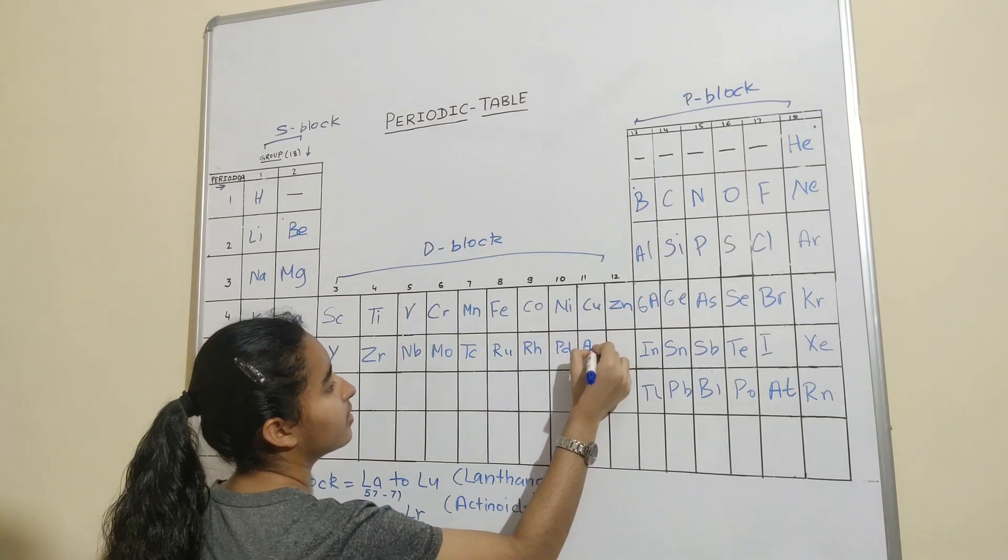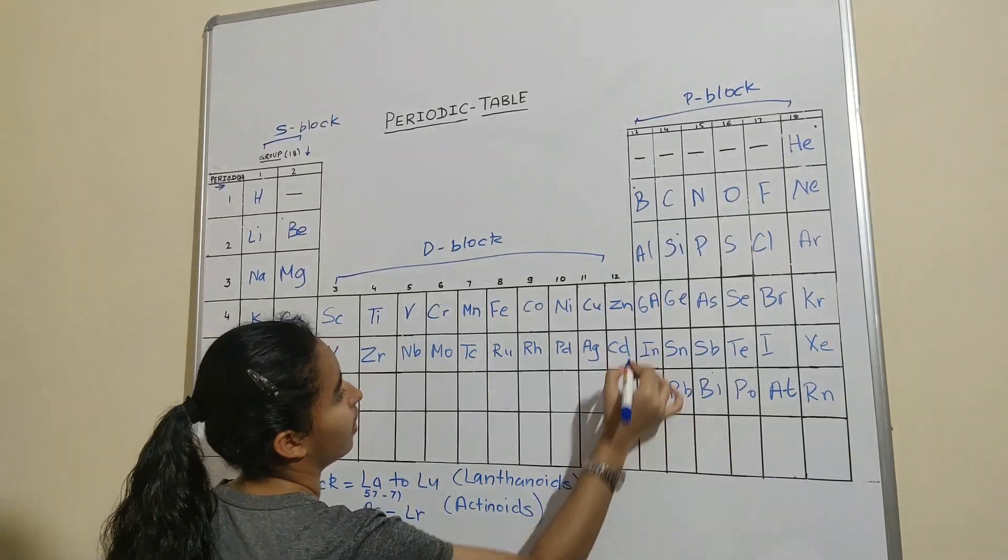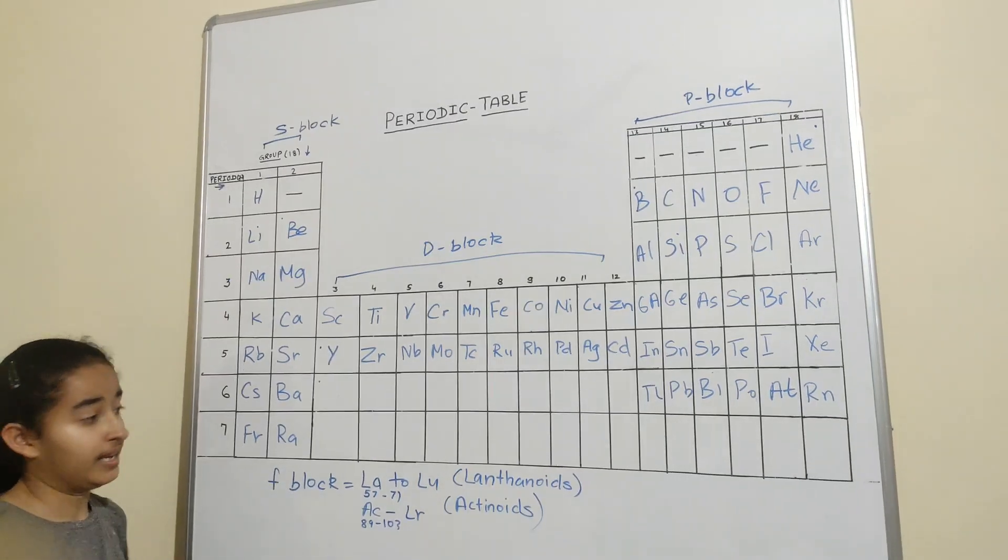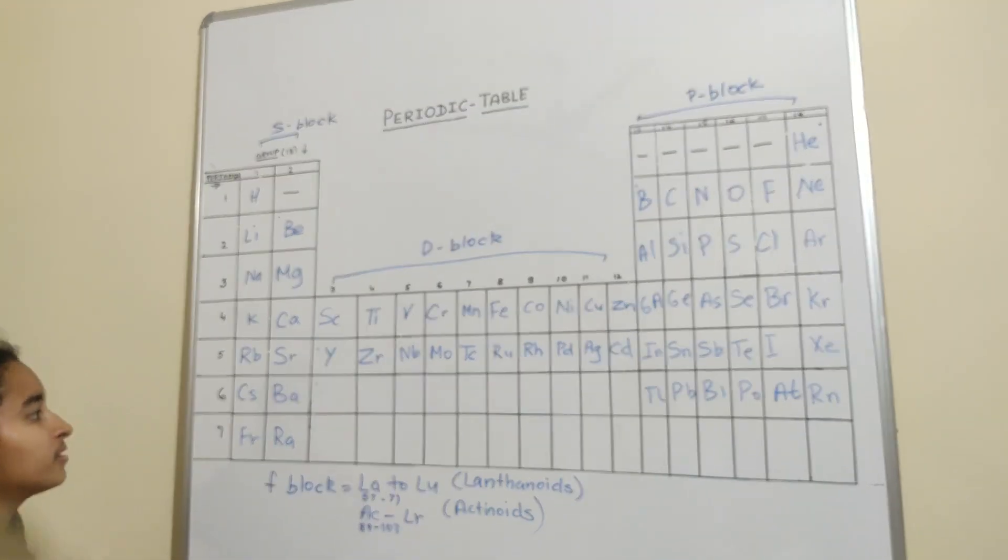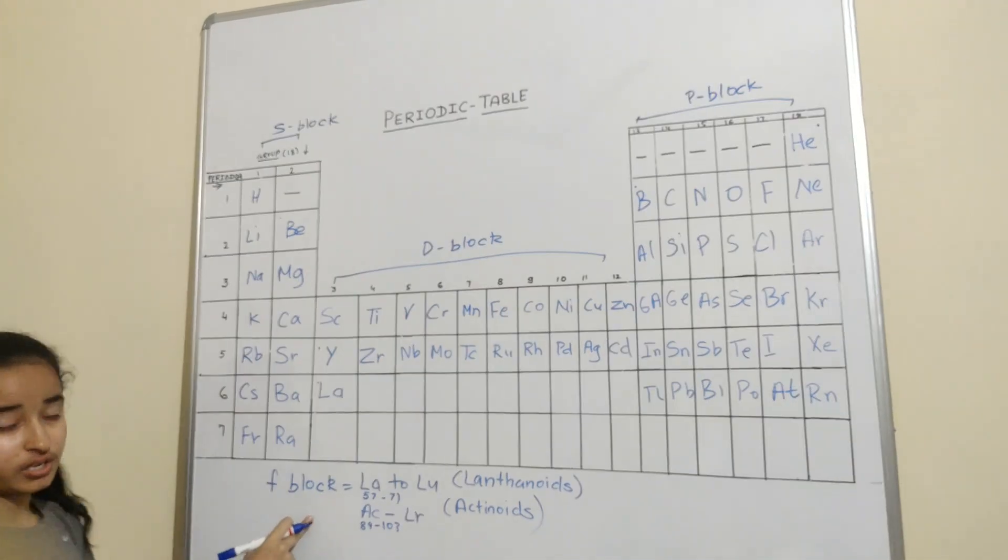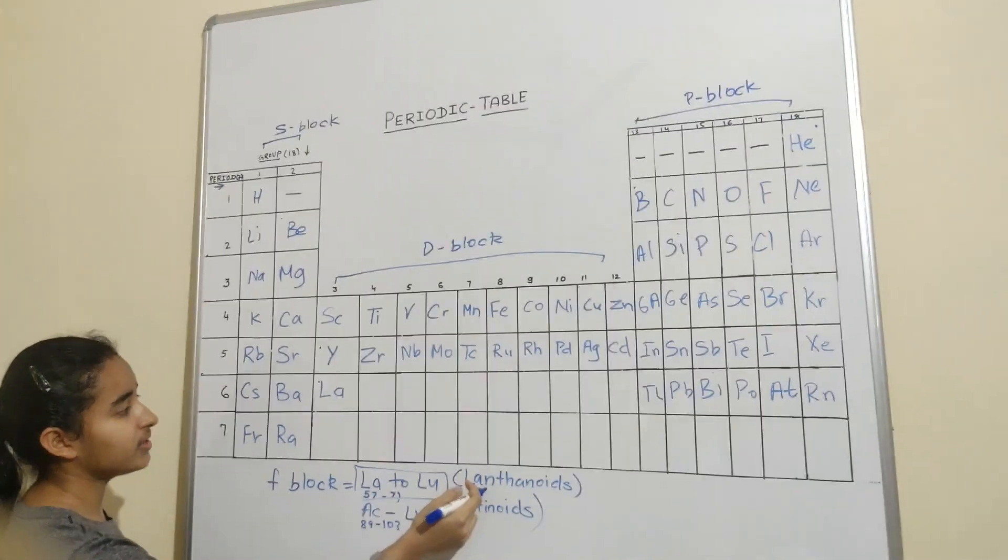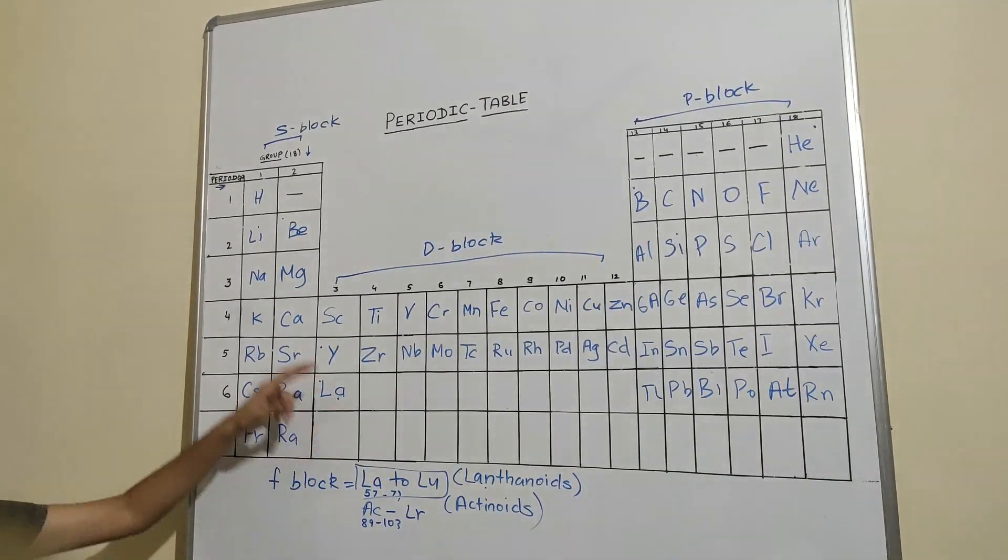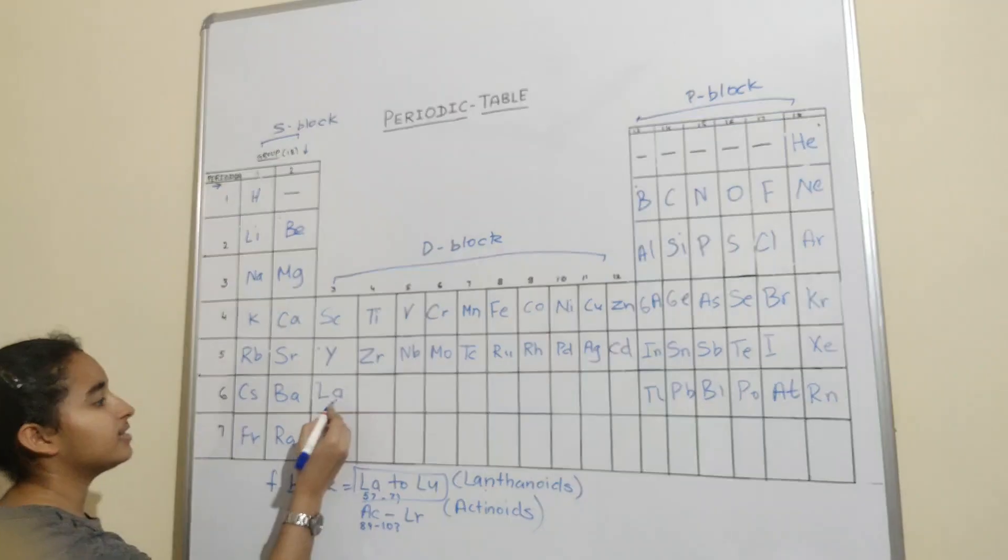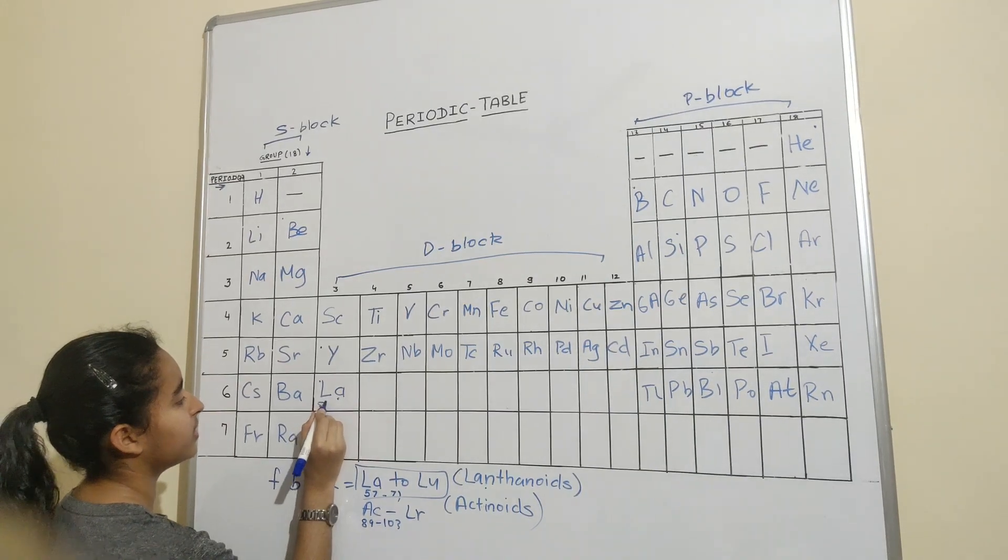And now if I talk about the sixth period, it will consist of La. La has been in the F-block. Let's start from this. They are lanthanoids and are not being classified into D-block. The reason behind this is they do not have the properties of the D-block, so they are being classified into the F-block. La starts from 57 to 71.